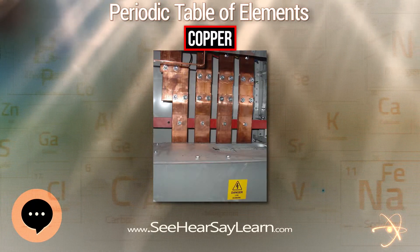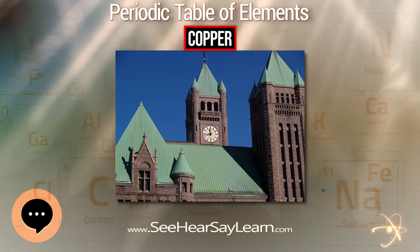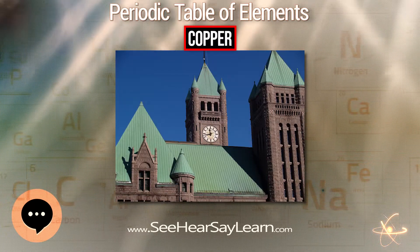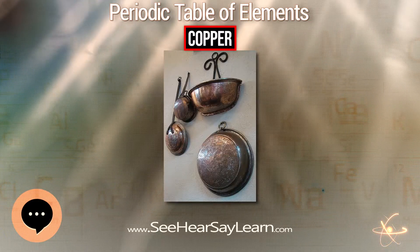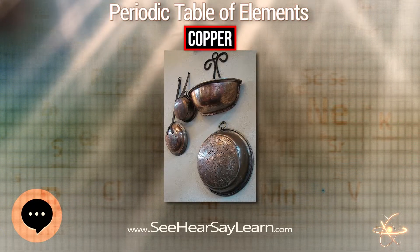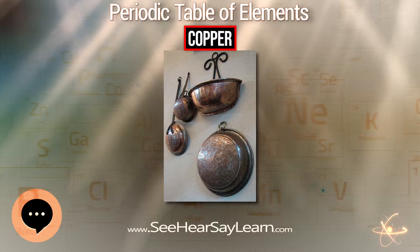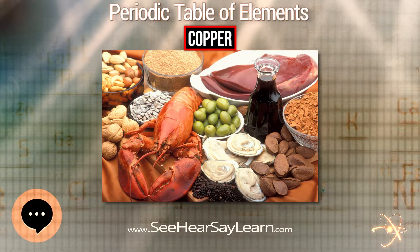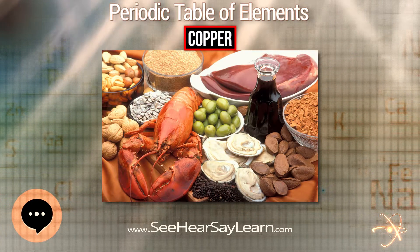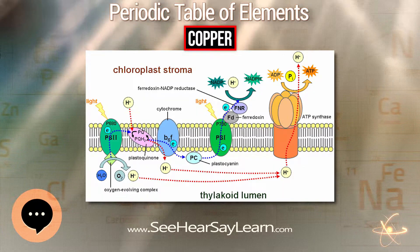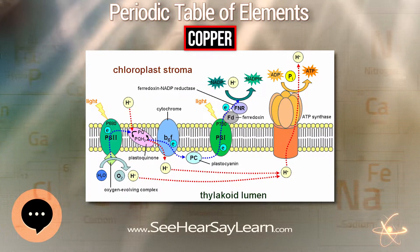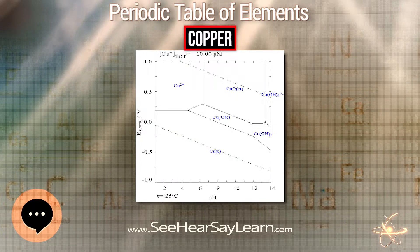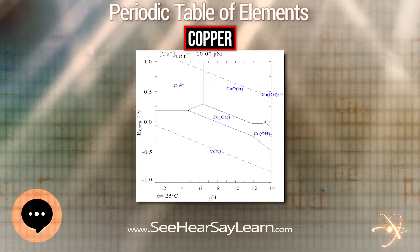Copper is sometimes used in decorative art both in its elemental metal form and in compounds as pigments. Copper compounds are used as bacteriostatic agents, fungicides, and wood preservatives. Copper is essential to all living organisms as a trace dietary mineral because it is a key constituent of the respiratory enzyme complex cytochrome c oxidase.